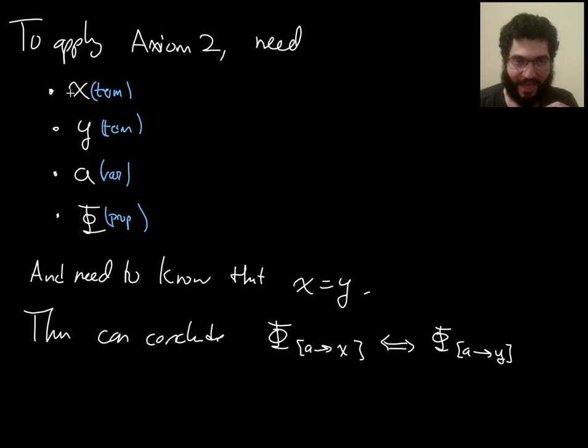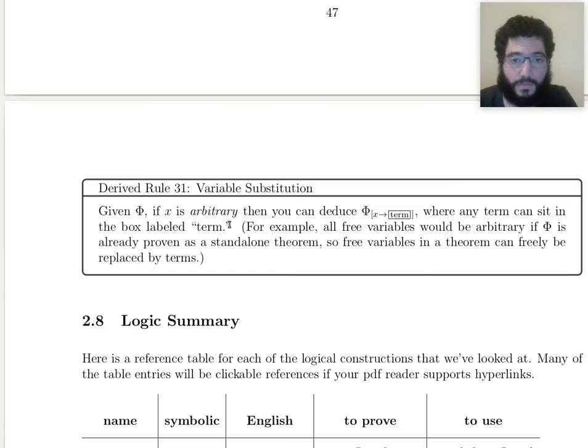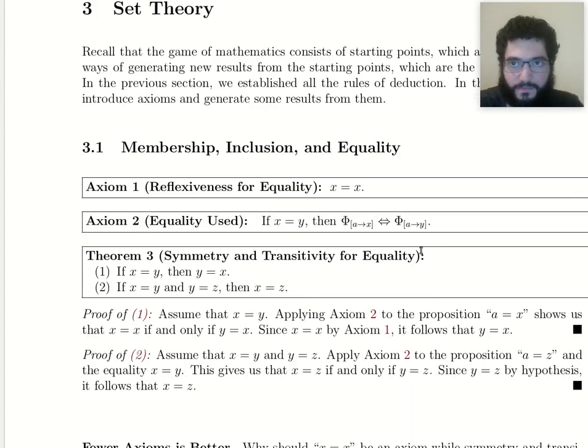Okay, so while x quotes x is a variable and quotes y is a variable, you can replace x by a term or replace y by a term when you are applying axiom 2. What I'm getting at when I say that is derived rule 31, this idea that if you have a standalone result with some free variables in it, then you can replace those variables by any term you want.